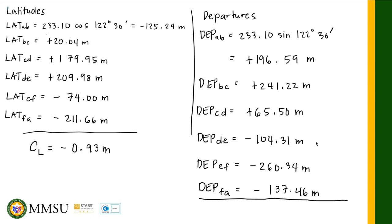We do the same for the departure: +196.59 + 241.22 + 65.50 − 104.31 − 260.34 − 137.46. The CD, the closure in departure, equals +1.20 meters. Take note of the sign.